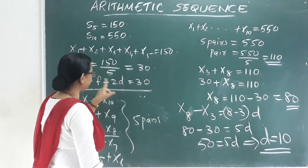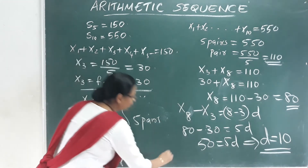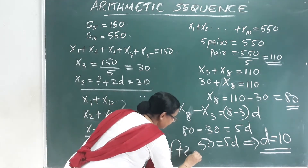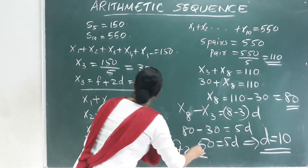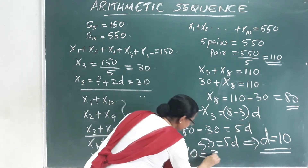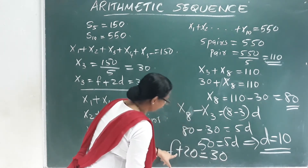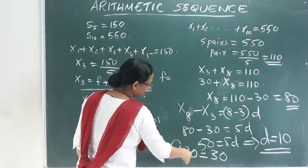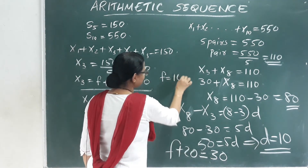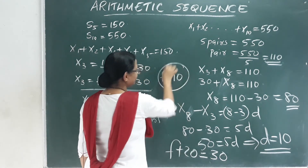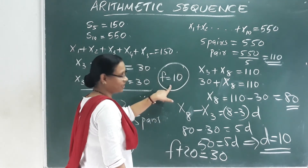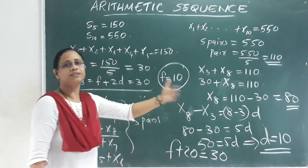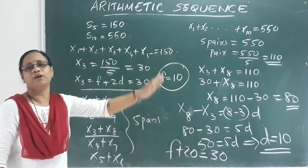To find the first term: f plus 2 times 10 equals 30, so f plus 20 equals 30, meaning f equals 10. So the first term is 10, common difference is 10, giving the sequence: 10, 20, 30.